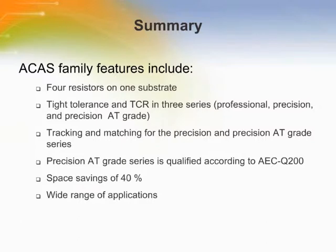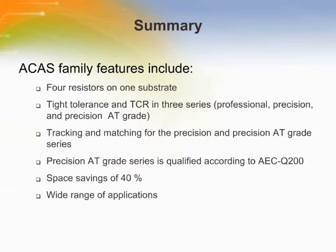In summary, the ACAS family offers tight tolerances and TCRs in two chip sizes and three series: the Professional, the Precision, and the Precision AT grade. The Precision and Precision AT grade series also provide tracking and matching properties as relative parameters. The Precision AT grade series is qualified according to AEC-Q200 with a maximum film temperature of 155 degrees centigrade. All devices in the 0612 size provide space savings of approximately 40% compared to four 0603 resistors, making the ACAS family ideally suited for precision voltage dividers and feedback circuits.